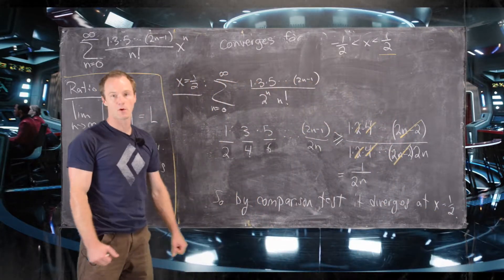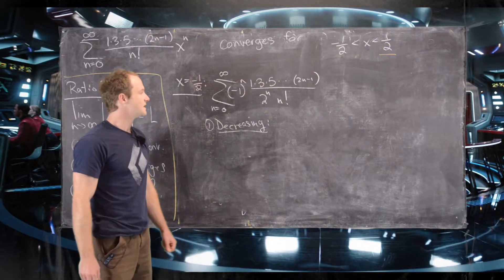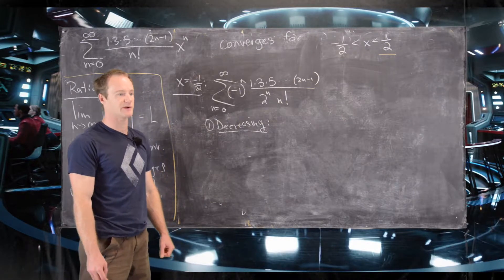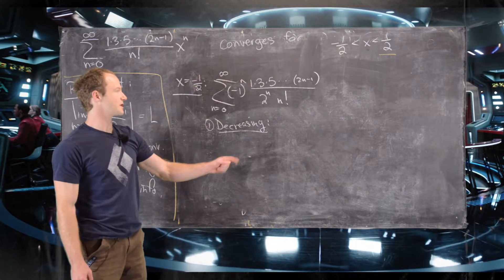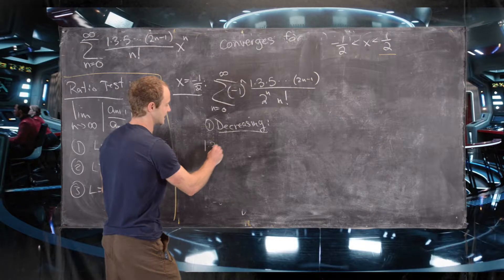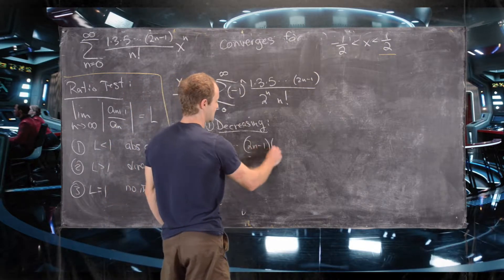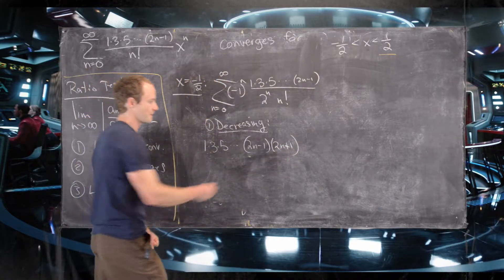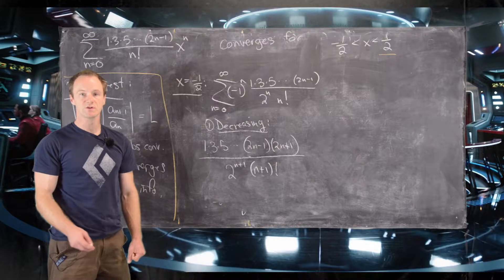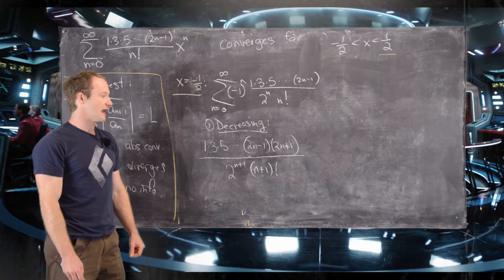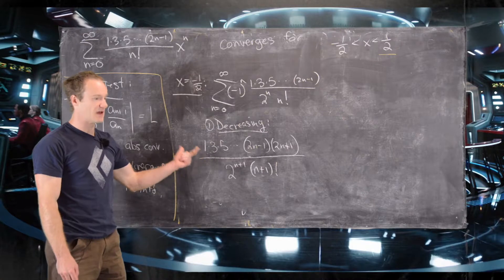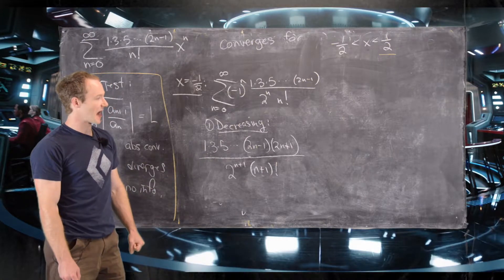Now we look at x equals negative 1/2. To use the alternating series test, we need to show the series is decreasing. We do that by showing the n plus first term is smaller than the nth term in absolute value. The n plus first term is 1 times 3 times 5 up to 2n minus 1 times 2n plus 1, all over 2 to the n plus 1 times n plus 1 factorial.